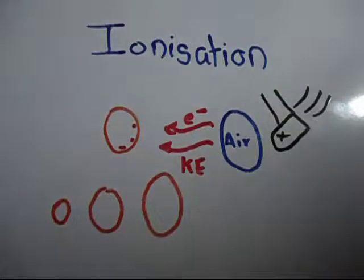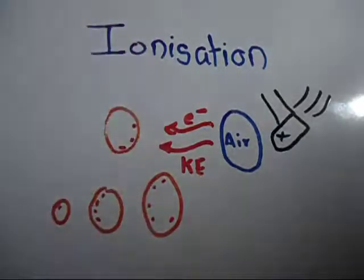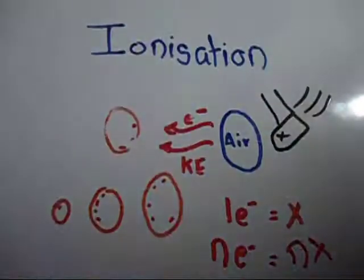Now, naturally, the larger the oil droplets, more number of electrons will go ahead and stick to it. Now, if one electron has a charge equal to X, then any electron sticking to the oil droplet will give it a charge N times X. That is, an integral multiple of X.